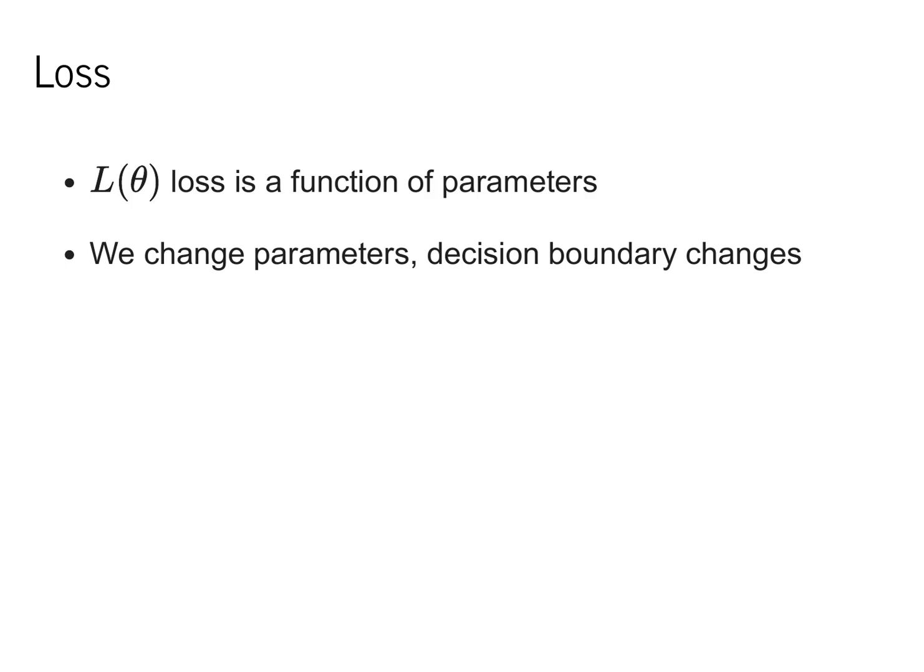One thing I want to note is that the loss function is a function only of the parameters theta. This differs from the model, which is a function of the input x, as well as the parameters. When dealing with loss, we'll be changing the parameters, which in effect changes where the decision boundary is on these graphs. However, as I noted earlier, the loss is not a function of any individual point, but is instead just a function of the parameters that utilizes the point to compute its final value.